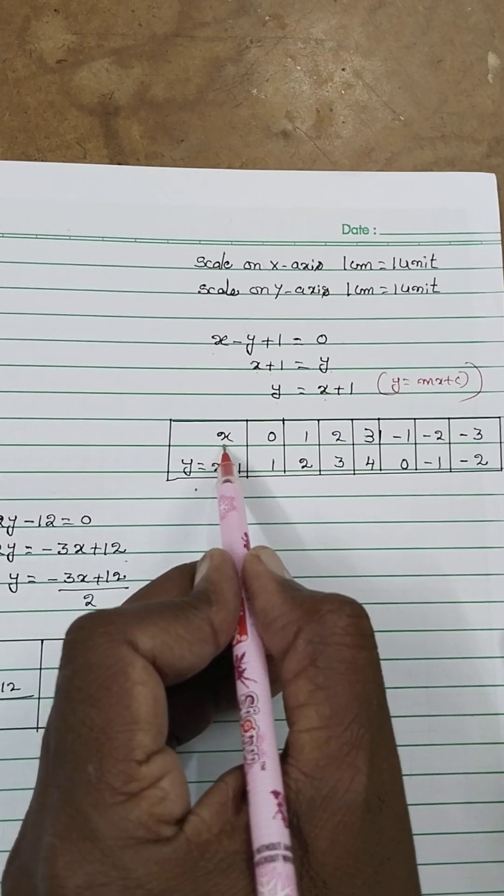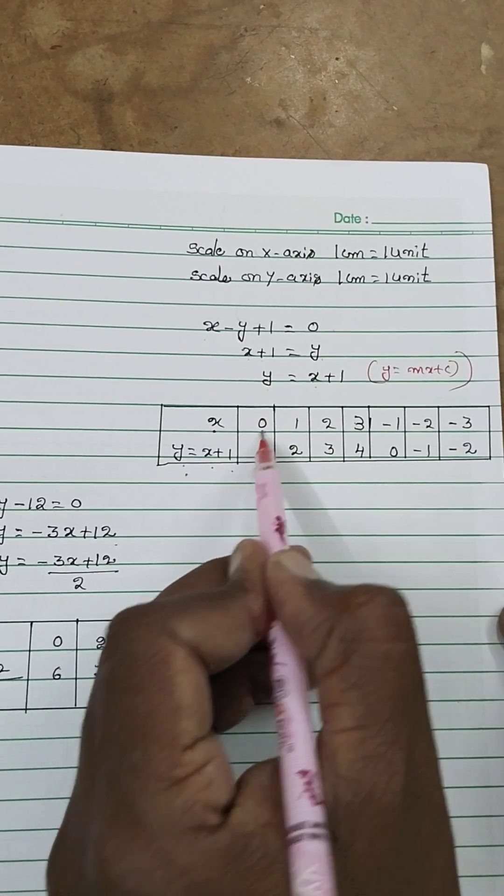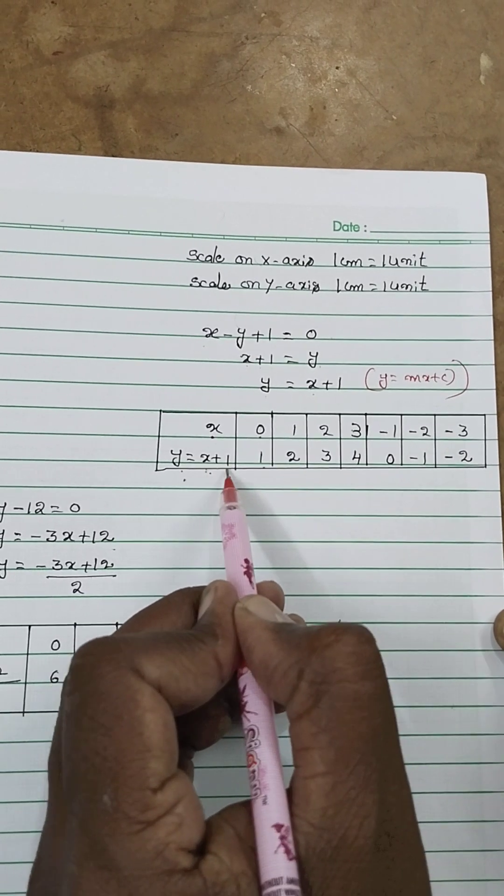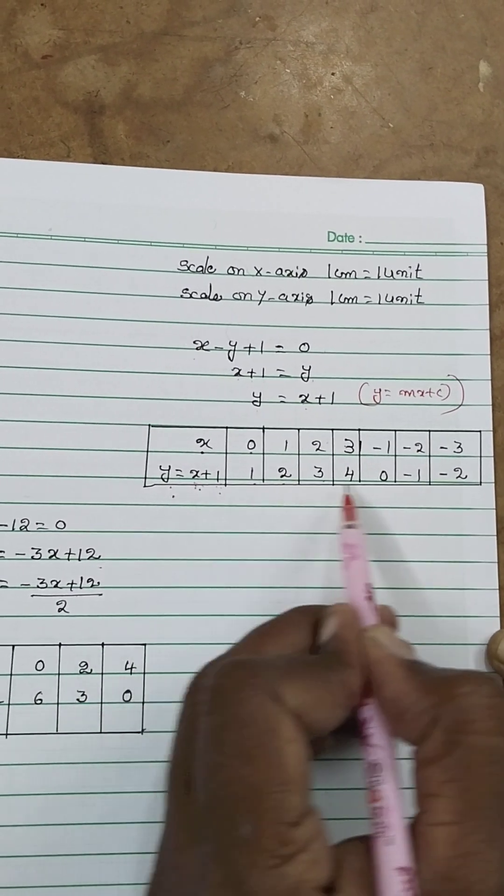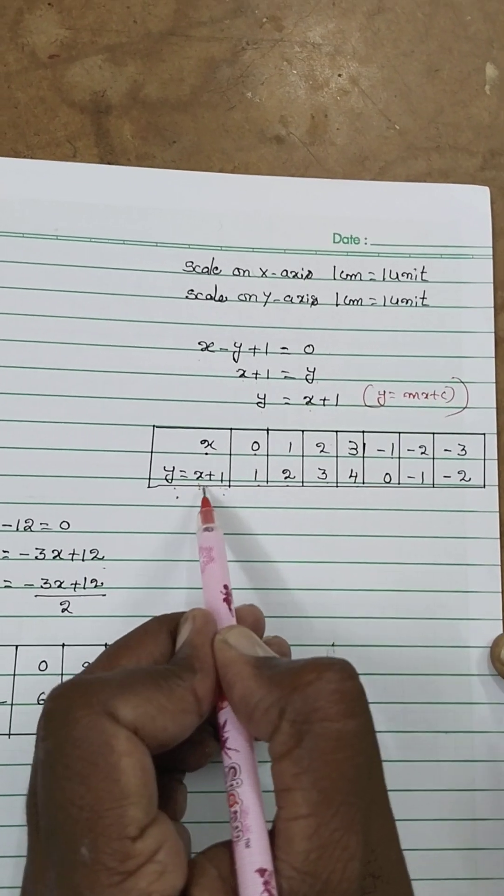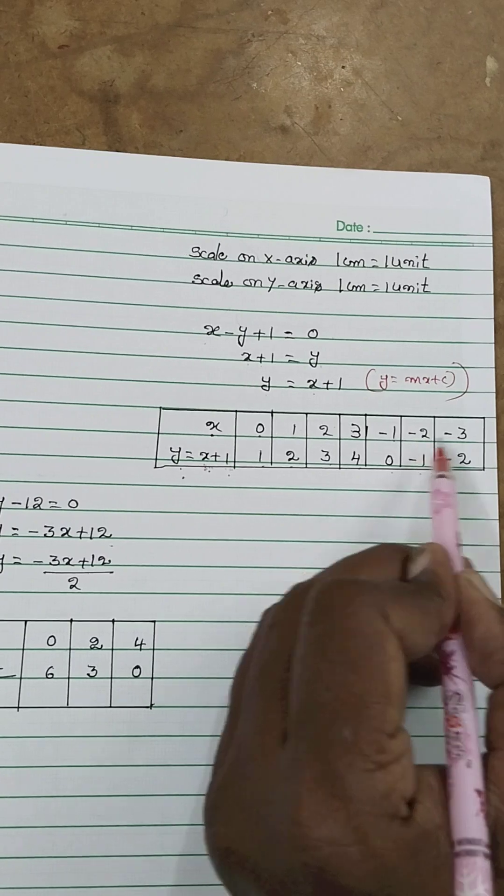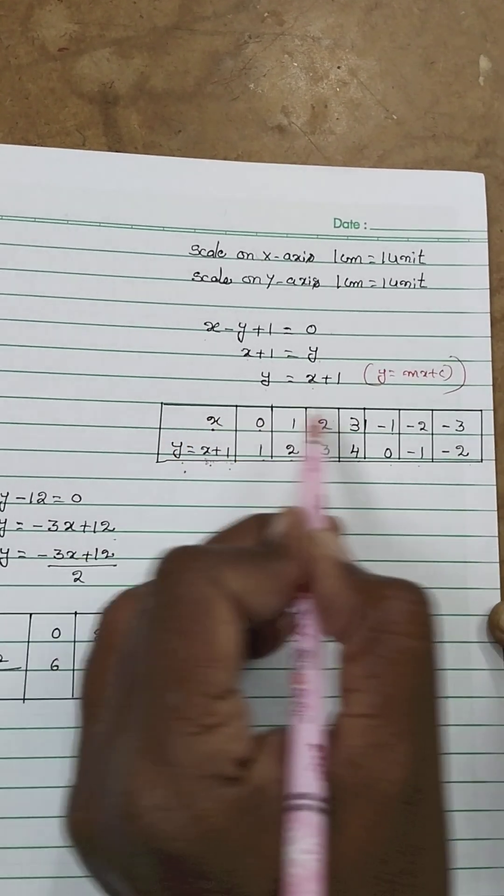So take x and y is equal to x plus 1. In the place of x equal to 0, you will get 0 plus 1 is equal to 1. You place 1, 1 plus 1 is equal to 2. 2 plus 1 is equal to 3. 3 plus 1 is equal to 4. Next minus 1, minus 1 plus 1 equals 0. Minus 2 plus 1 is minus 1. Minus 3 plus 1 is minus 2. This is the first equation in the graphical table.